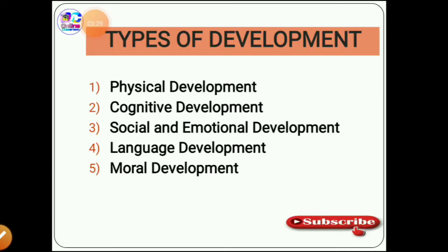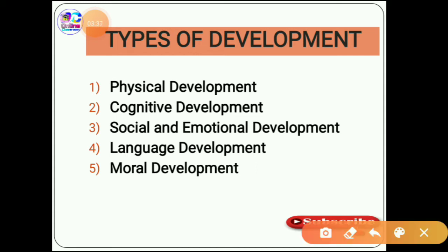Next, we are going to see the types of development. Development refers to different dimensions: physical, cognitive, social, emotional, language, and moral. Physical development is very common — it involves observable changes including gross motor skills like walking and jumping, and fine motor skills like printing and writing. It is largely dependent on the child's health and nutritional status, and always refers to maturation.